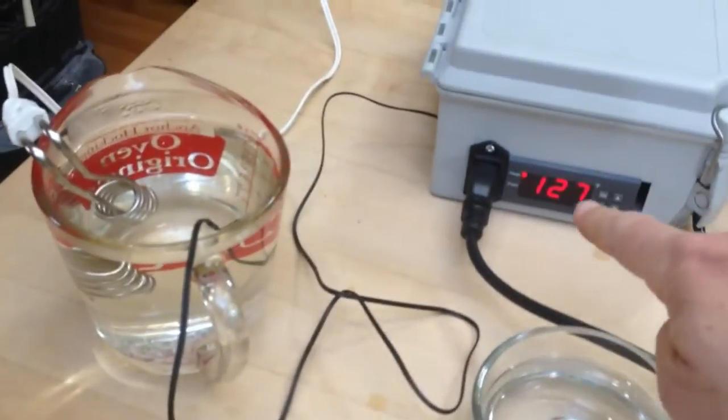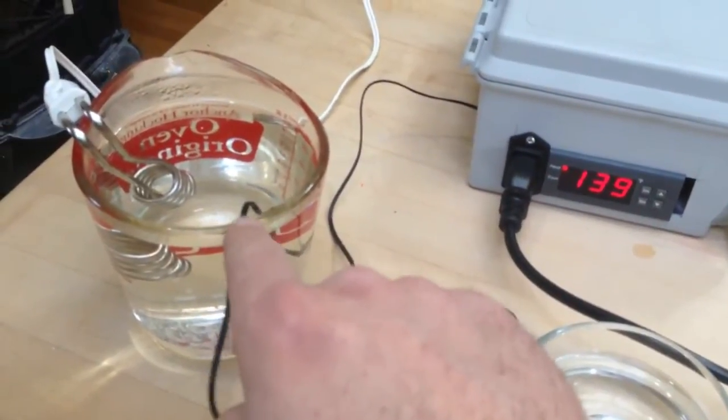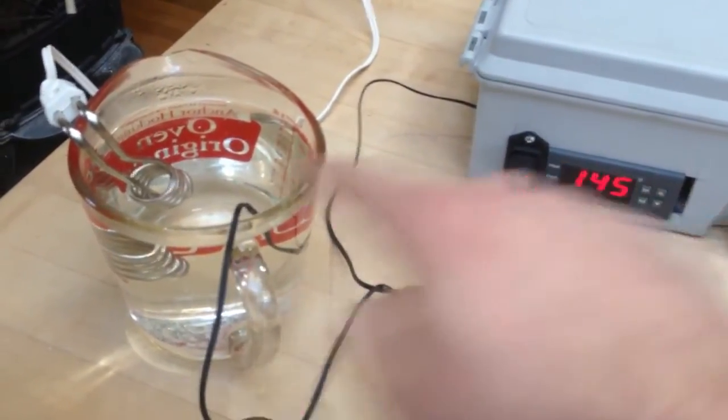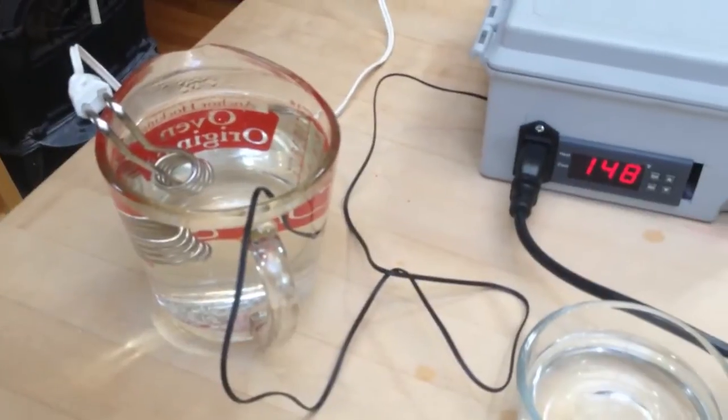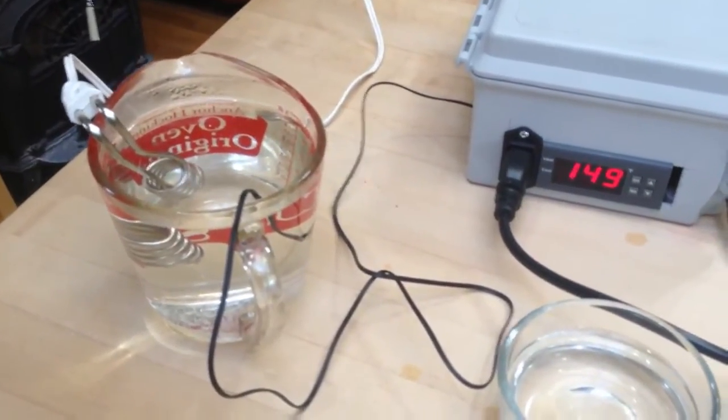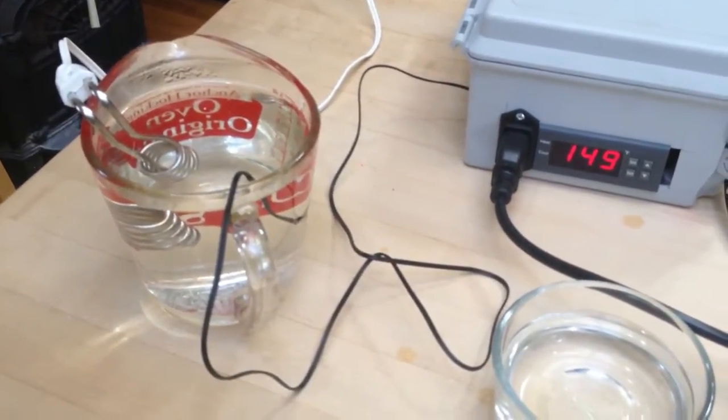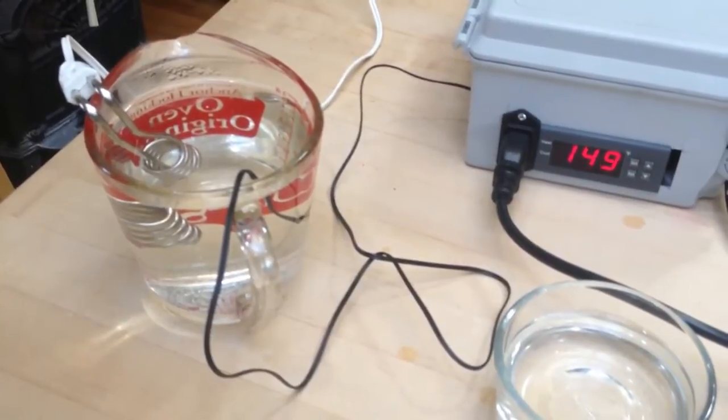So essentially, what this does is sense the temperature and turn your heater on and off. Typically, this would be for a crock pot. I'm just experimenting with it, but anything you can plug into a regular electric outlet will work.